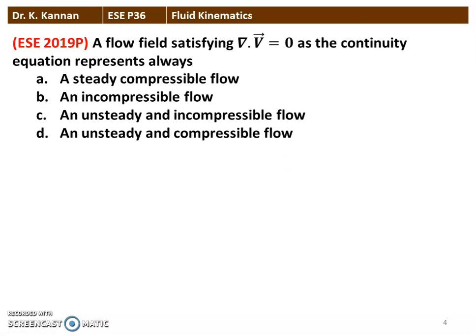Next question from the 2019 question paper: a flow field satisfying ∇·V = 0 as the continuity equation — among the four options, the correct answer is steady incompressible flow. The condition ∇·V = 0 indicates incompressible flow.